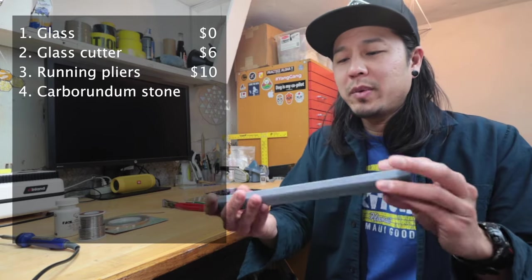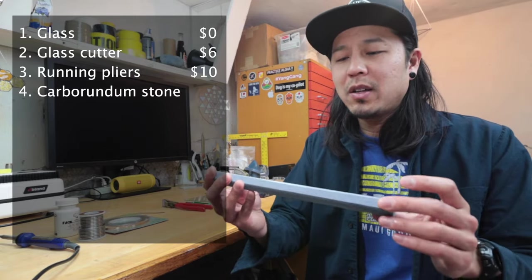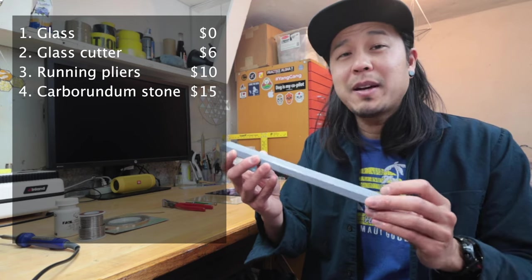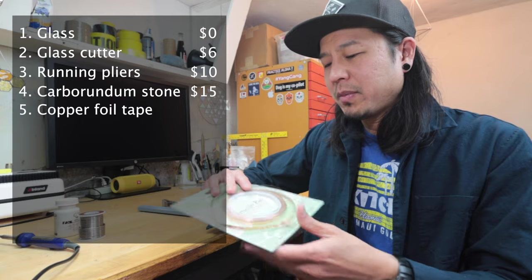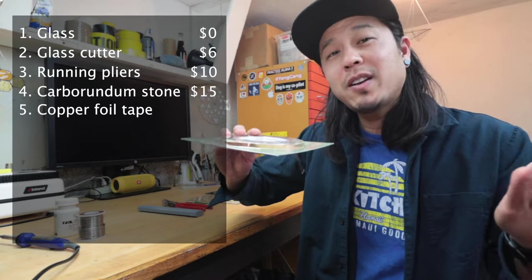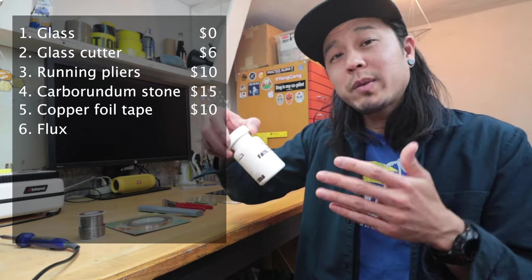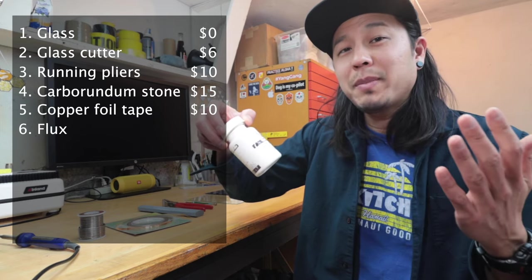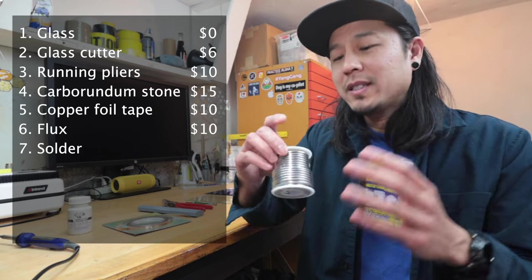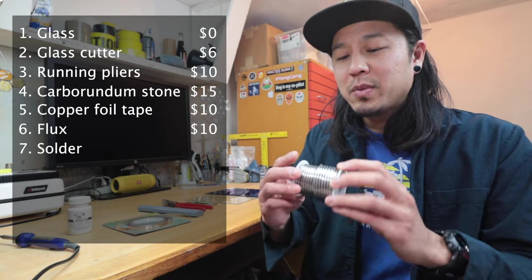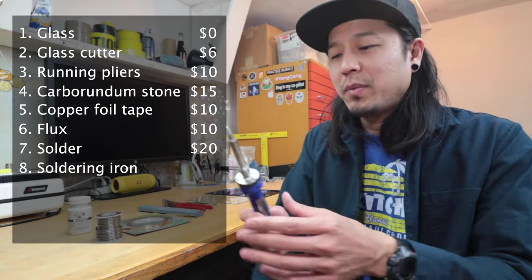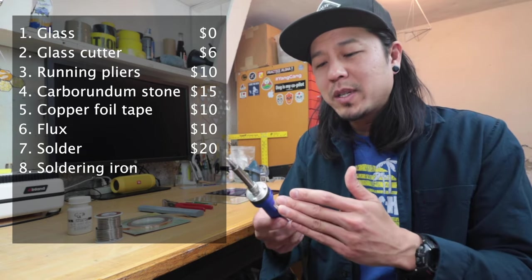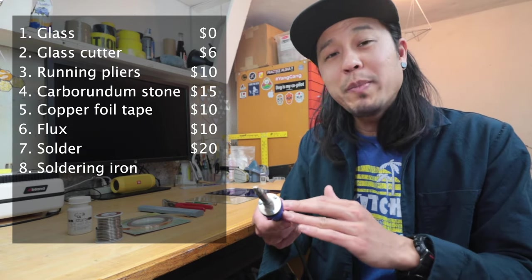The carborundum stone that we talked about is about $15. Start off with this and then you don't have to dump all that money into a grinder just yet. This tape is also something pretty cheap. It's going to run you about $10. Then we've got the flux that you're going to need. I like the liquid flux. These run about $10. And then the solder itself is going to cost a little bit more. This one is going to be about $20. And of course the soldering iron, which this is not the one we're talking about if you want to go low budget. Let's put $15 for that if you want to go that budget route.